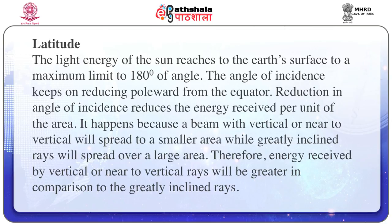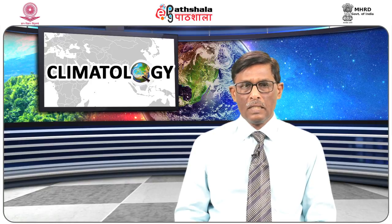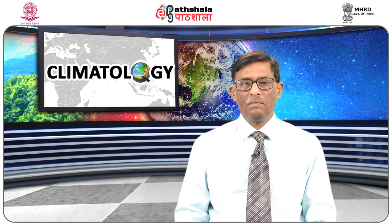Reduction in the angle of incidence reduces the energy received per unit of area. It happens because a beam with vertical or near-vertical incidence will spread to a smaller area, while greatly inclined rays will spread over a larger area. Therefore, energy received by vertical or near-vertical rays will be greater in comparison to the greatly inclined rays. Sun rays are vertical in the equatorial region, while in the polar region they are mostly inclined. That is why the low latitude areas are warmer and high latitude areas are colder.